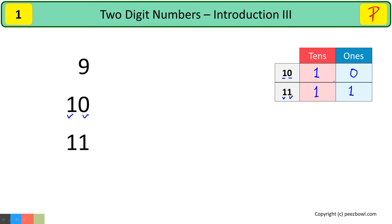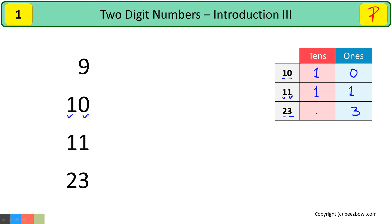Same way, let us take any random number — say, number 23. In this case, at the ones place we have number 3, and at the tens place we have number 2.